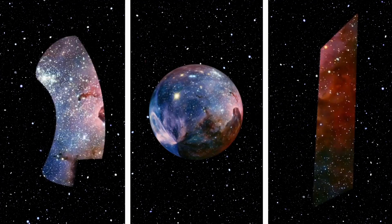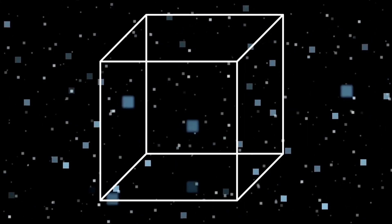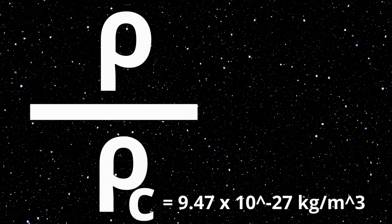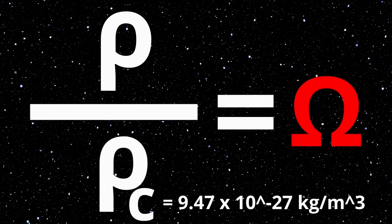The most accepted model. So which one is it? Before answering this question, the notion of density parameter should be introduced. If you divide the average density of the universe by the mass needed for the universe to exactly stop expanding, critical energy density, you get the density parameter.